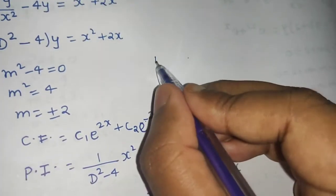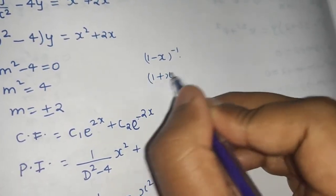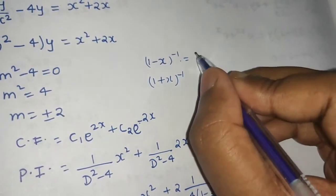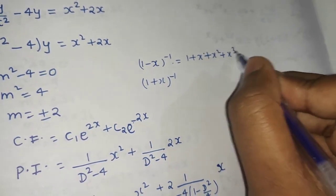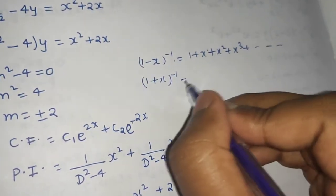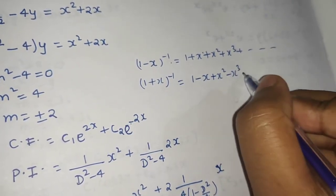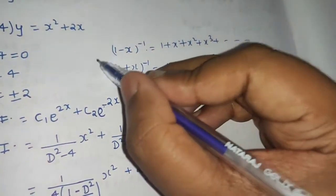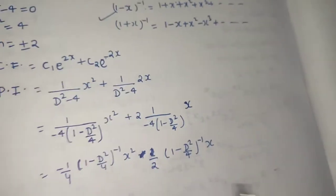We have two formulas: (1 minus x)^(−1) expands as 1 plus x plus x² plus x³ and so on — all positive signs. And (1 plus x)^(−1) expands with alternating plus-minus signs. Since we have a minus sign in the middle, we use the first formula with all positive terms and increasing powers.